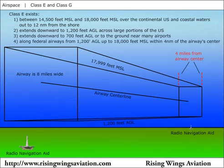Class E airspace is also designated along Federal Airways called Victor Airways. Victor Airways are normally 8 miles wide, 4 miles to either side of the airway's centerline, and extend from 1,200 feet above the ground up to and not including 18,000 feet above sea level.